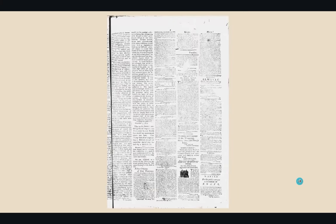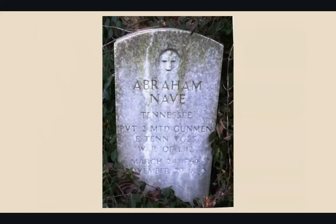One of those volunteers that went to Florida was my ancestor — that's his grave right there. Private Abraham Nave, Tennessee. Private, Second Mounted Gunmen, East Tennessee Volunteers, War of 1812. It has to specify East Tennessee because there was a Second Volunteer Mounted Gunmen of East Tennessee and a Second Volunteer Mounted Gunmen of West Tennessee. If you're doing genealogy and trying to find out about your ancestors, that's something you're going to have to deal with. It was a jumble because there was a last-minute emergency volunteer mobilization.